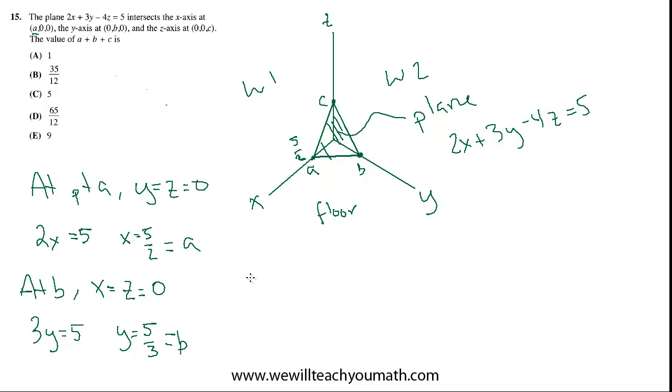And lastly, for C, at point C, we can set x and y equal to 0, which implies that minus 4z equals 5, which means z equals 5 over negative 4.